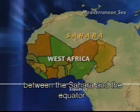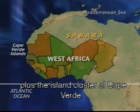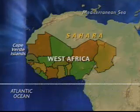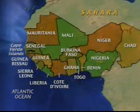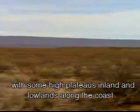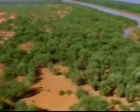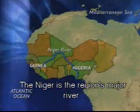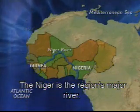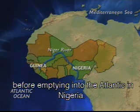West Africa includes the countries between the Sahara and the Equator and between North Central Africa and the Atlantic Coast, plus the island cluster of Cape Verde. This region is mostly plains, with some high plateaus inland and lowlands along the coast. The Niger is the region's major river. It begins in Guinea and flows in a loop through the region before emptying into the Atlantic in Nigeria.